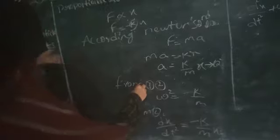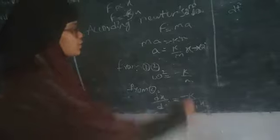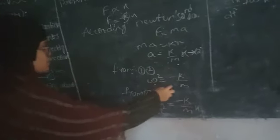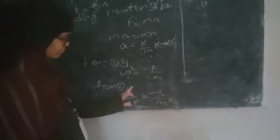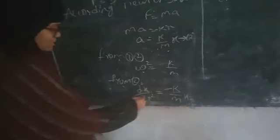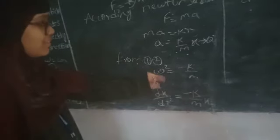From comparing A equals minus omega square X with A equals minus K by m times X, we get omega square is equal to K by m.